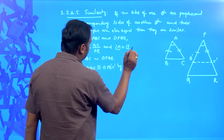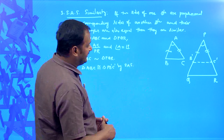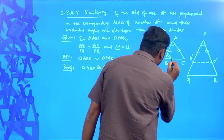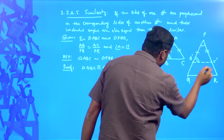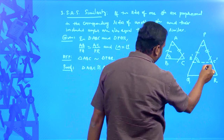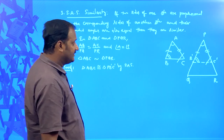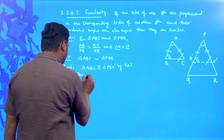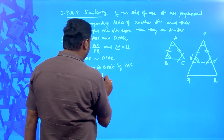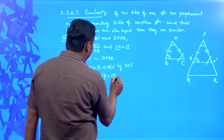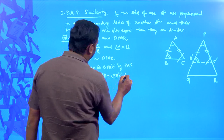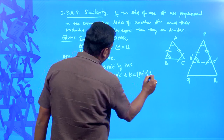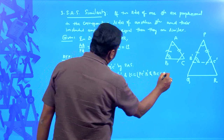Since the two triangles are congruent, by CPCT we can say: angle B = angle PB'C', angle C = angle PC'B', and also BC = B'C'.